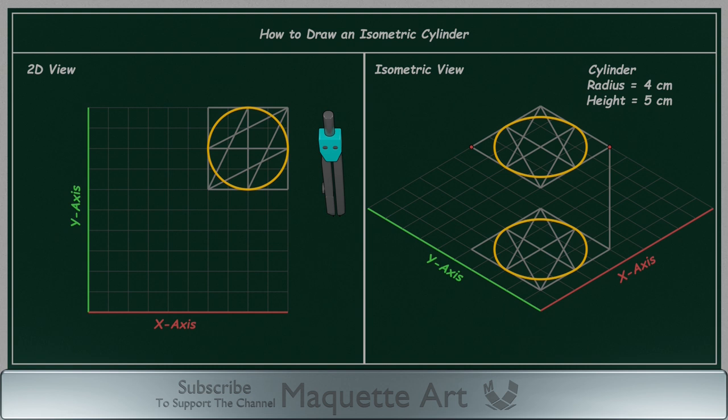But first, we need to find the connection points or tangent points. By connecting those 2 acute angles, we got those 2 points. Those are the tangent points. Now we can connect them to finish the cylinder.